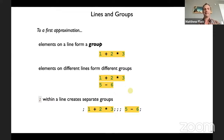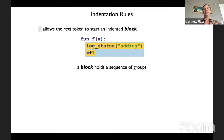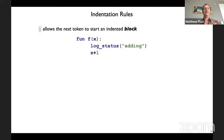Then we get to the indentation part, and that's where colon comes in. Colon starts an indented block, and then the block has a sequence of groups. Here 'log status' and then 'adding in parentheses' is one group, and 'x plus one' is another group — the blue box around those is meant to be the block holding them. The colon is kind of part of the block, although it doesn't show up in the parse. That block is part of the group where the colon is, so the group is the function symbol, the 'f' symbol, 'x' in parentheses, and a block.